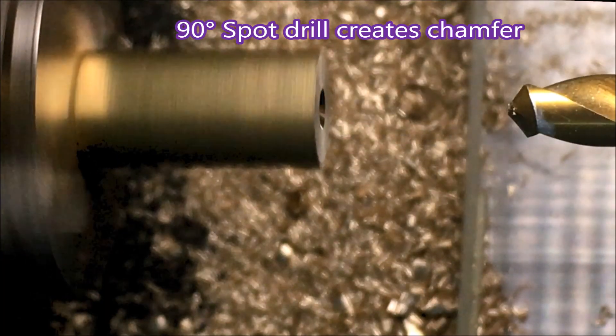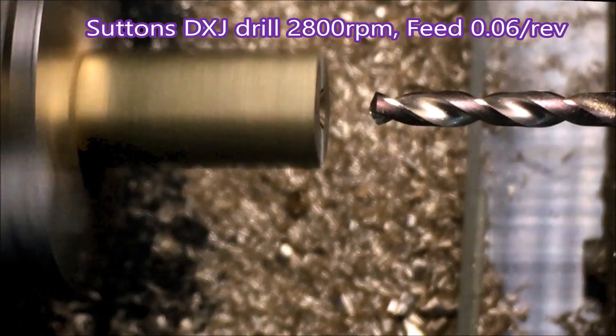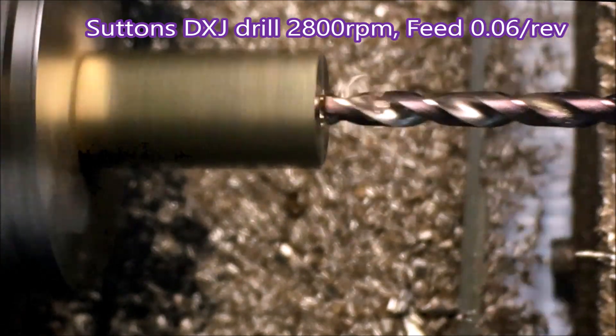Then the spot drill comes in, that's the one that was mounted in the turret, and then this drill is the one that was mounted on the gang block.